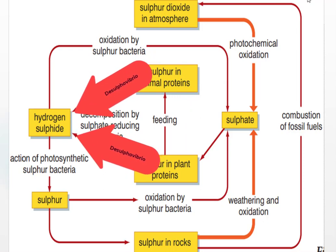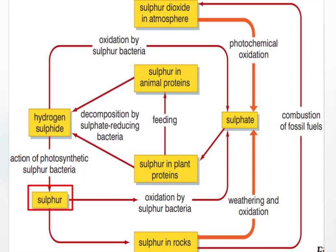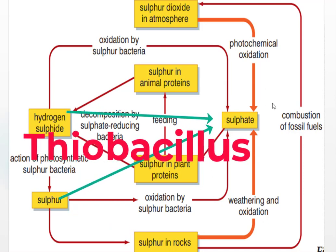As we discussed before, when these plants and animals die, sulfate-reducing bacteria release sulfur from the proteins in the form of hydrogen sulfide. Then, photosynthetic sulfur bacteria in aquatic environments convert hydrogen sulfide to sulfur. And this sulfur can be incorporated in rocks. Sulfur bacteria or Thiobacillus can convert hydrogen sulfide or sulfur back to sulfate.